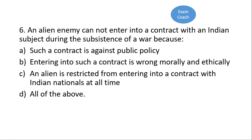The next question: an alien enemy cannot enter into a contract with an Indian subject during war. A is the correct option because such a contract is against public policy. An alien enemy is denied from entering into a contract with an Indian national during war since such a contract is against public policy.